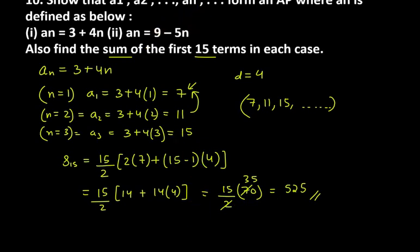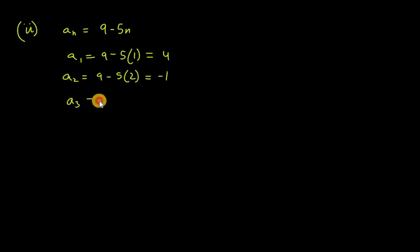Let's do the second part similarly. Second is An equals 9 minus 5n. Now find A1 value: 9 minus 5 times 1, you will get 4. Find A2: 9 minus 5 into 2 equals 9 minus 10 is minus 1. A3 is 9 minus 5 into 3, it is 9 minus 15, so minus 6.